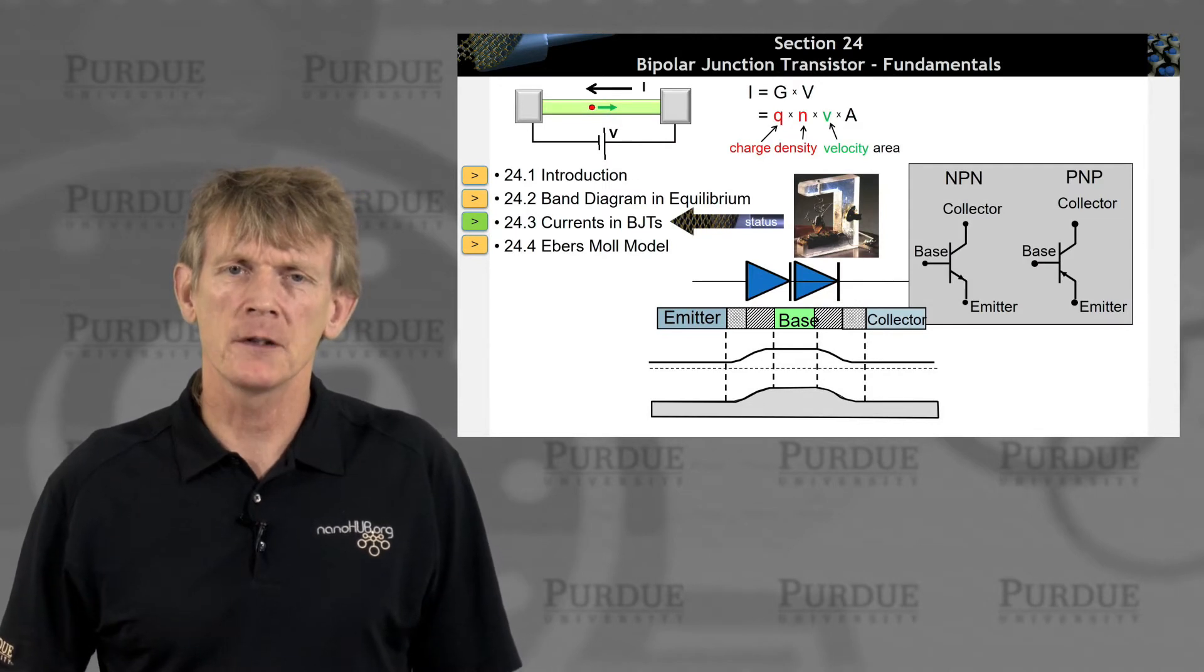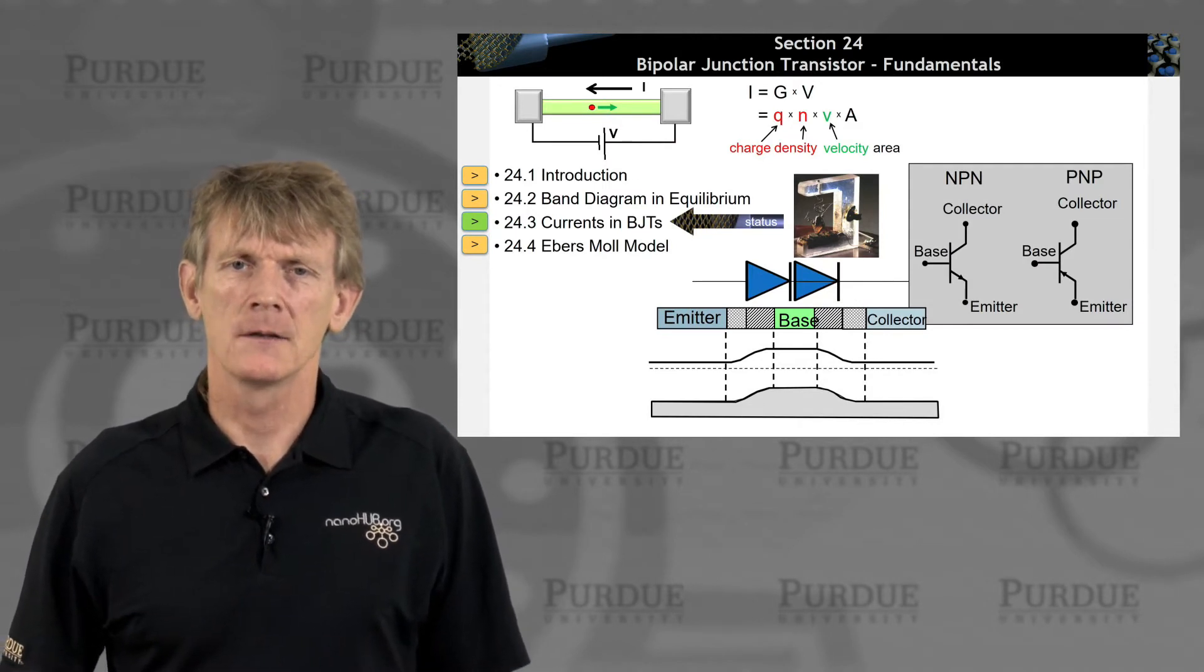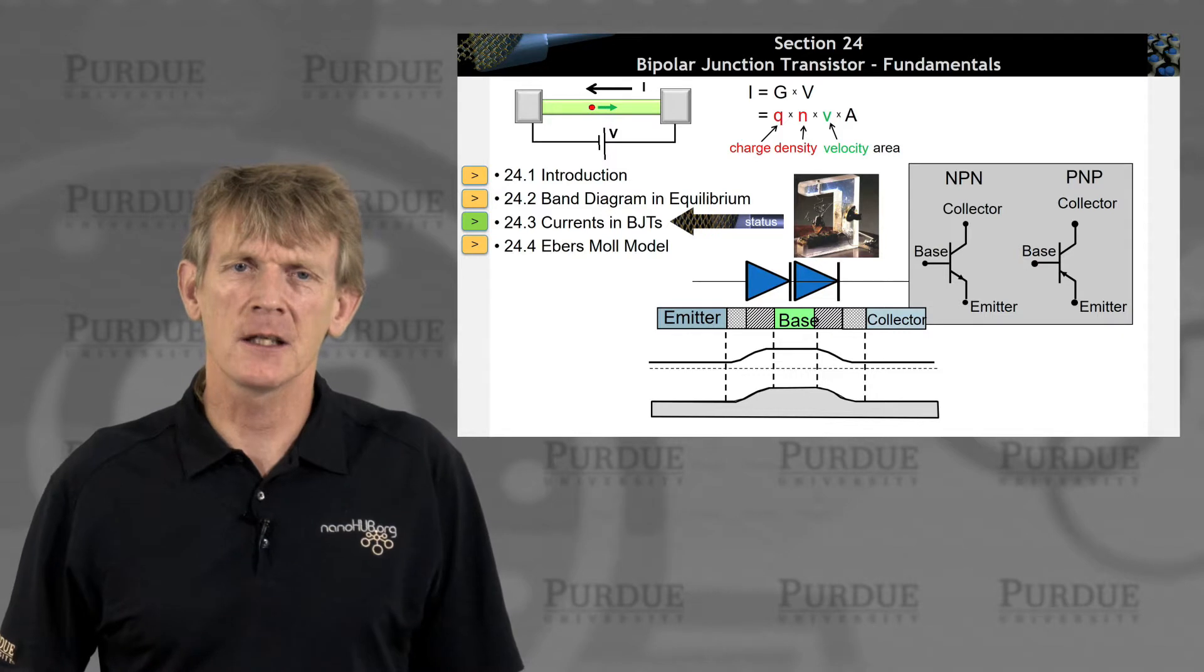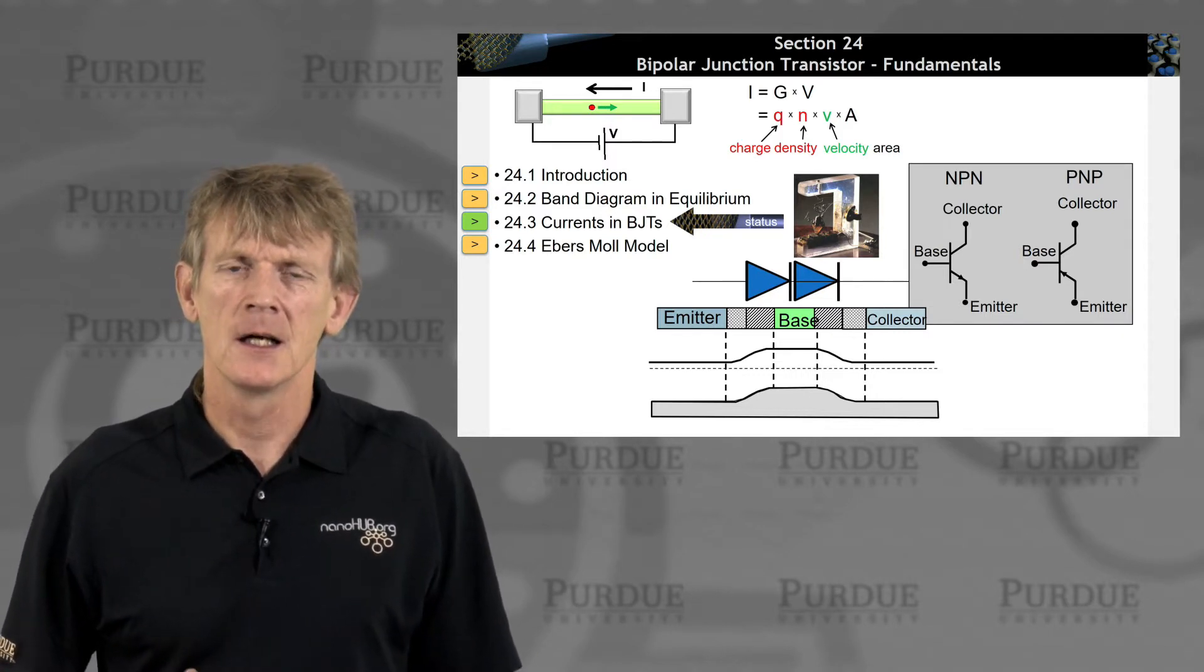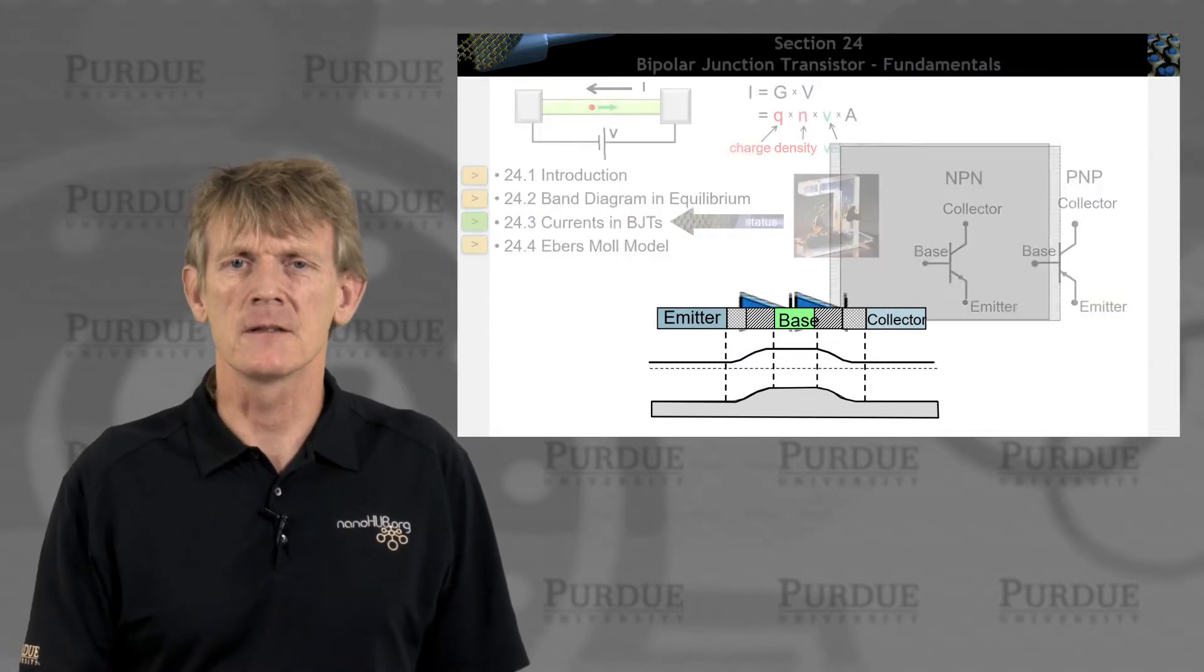Same layout as we had before. We're now starting to use the p-n junction equations that we had for the charge densities for the minority carriers and start deriving some current expressions for this BJT.